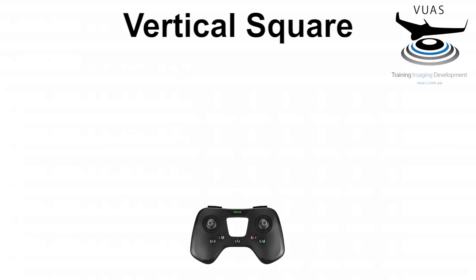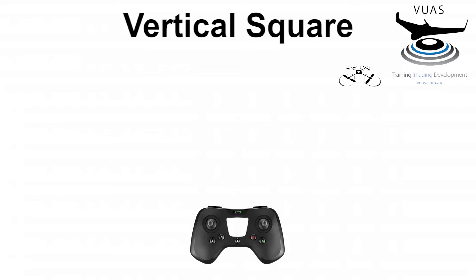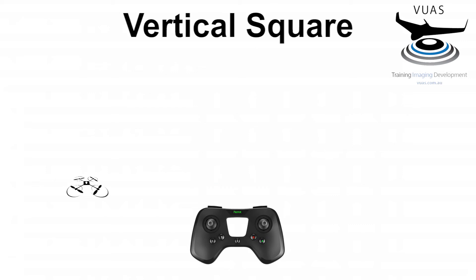Next we will describe the vertical square and again use our transmitter with arrows to show the movements. We start by using our left thumb to throttle up and move vertically, then come to our hover. We then use our right thumb to roll to the right and come to a hover. We use our left thumb to throttle down and descend, come to a hover, and then use our right thumb to roll to the left to return to our original position and hover.